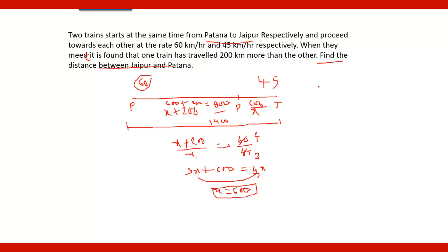To solve this, you just write: one speed is 60, another speed is 45, one is taking distance x, and another is taking 200 more. Take the ratio of one distance upon the other, set it equal to the speed ratio, and solve.